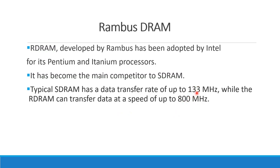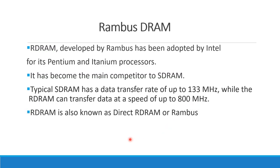Rambus DRAM was developed with Intel — that is the Rambus DRAM for Intel Pentium. SDRAM has the advantage of speed, but Rambus runs at 800 MHz. Direct DRAM, also called Direct RDRAM, is the Rambus version.